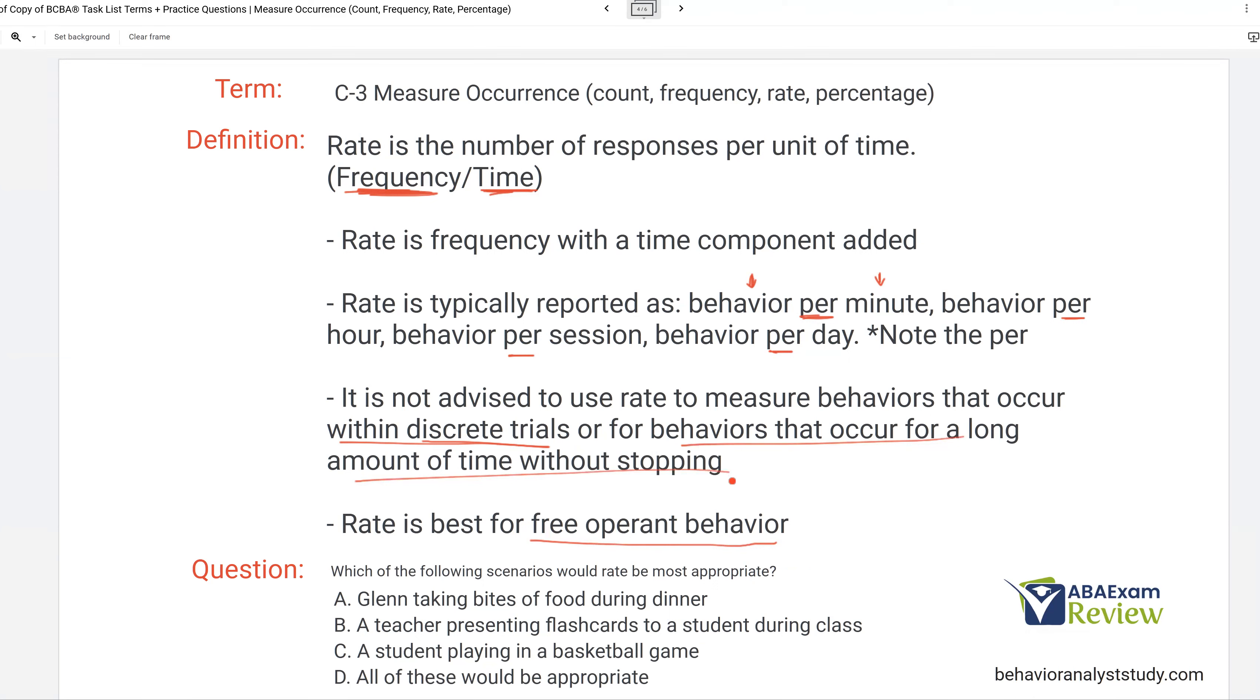So what you really want to do is look for some free operant behavior where the person is just engaging in behavior without a lot of control from somebody else. And you want to avoid behaviors that occur for a long amount of time without stopping. For instance, playing, let's say, playing in a football game. If you're playing in a football game and you're playing for a long, long amount of time, well, that behavior is just going and going and going. A rate is going to be difficult to take. Not sure how much it's going to tell you. So again, the key here as an analyst is not so much what is count, what is rate, because that's, for the most part, straightforward. It's when are you going to use these measurements? And that's up to you.